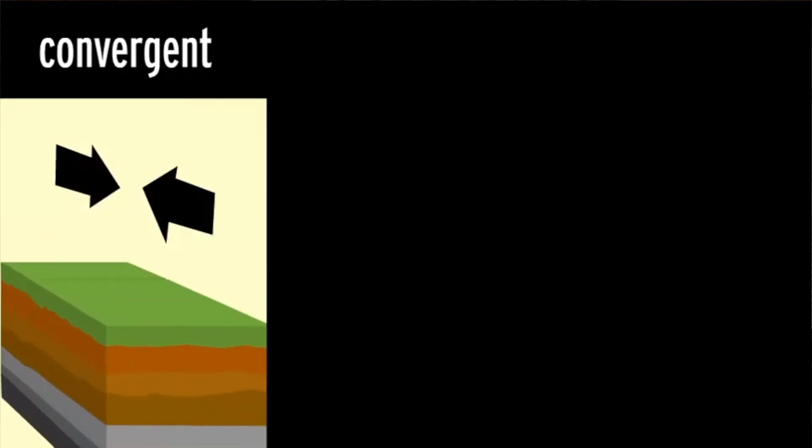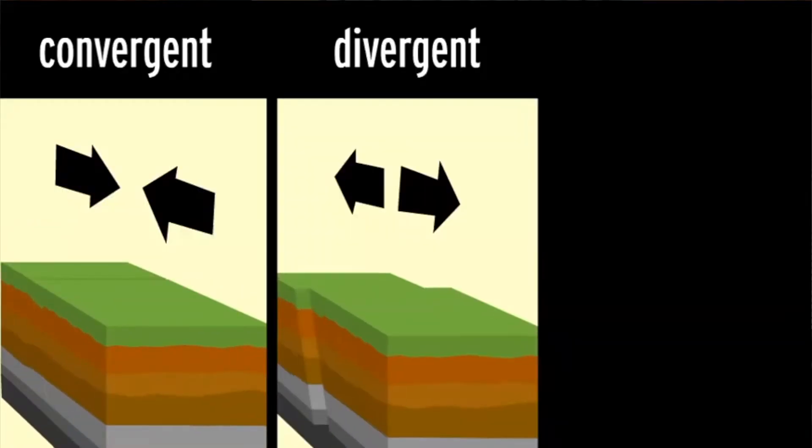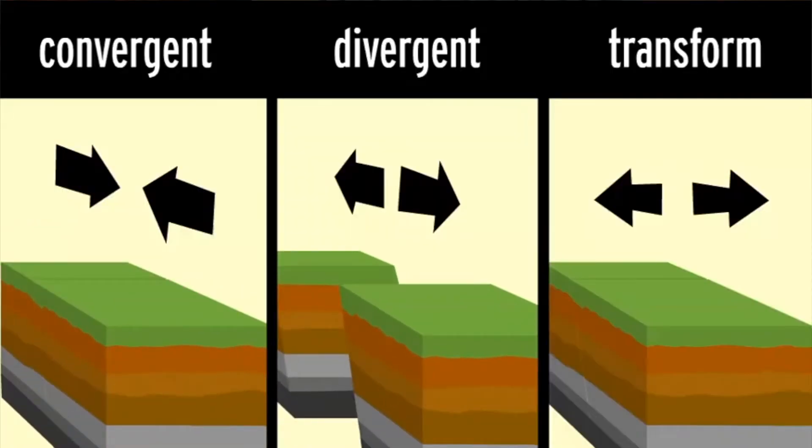Much like this theory, plate tectonics also create boundaries. To be more specific, they create three types of boundaries: divergent, convergent, and transform fault boundaries.